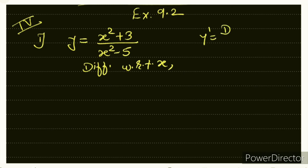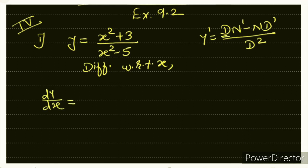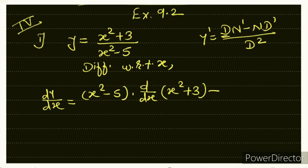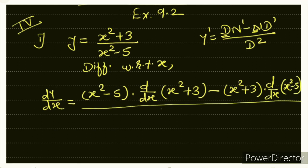Remember: D comes first in A, B, C, D. So dy/dx = [d·(dn/dx) − n·(dd/dx)] / d². Writing it out: (x² − 5) into derivative of (x² + 3), minus (x² + 3) into derivative of (x² − 5), upon (x² − 5)². Note: do not expand the denominator square; keep it as it is and only solve the numerator.